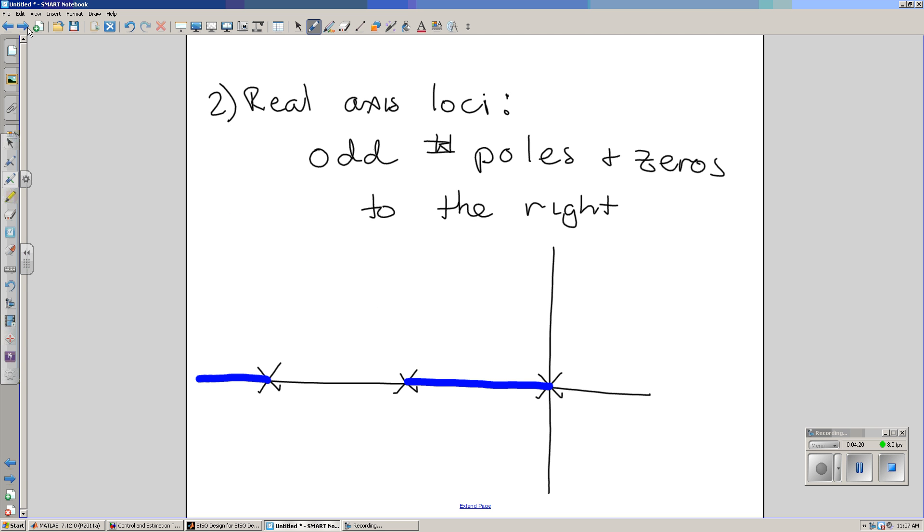If I look at the real axis, the angle from a pole that's to the left is zero degrees. The point right here, that angle is zero degrees. Angle from a pole to the right is 180 degrees. 180 degree angles have kind of a weird property. If I add an odd number of 180 degrees, I wind up at 180 degrees. It's clock math. So, in essence, the real axis loci are all points in the root locus that have an odd number of poles or zeros to the right.